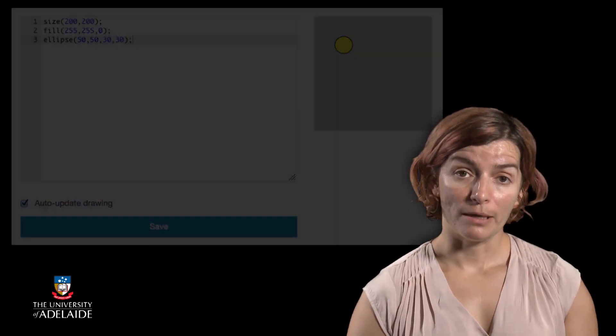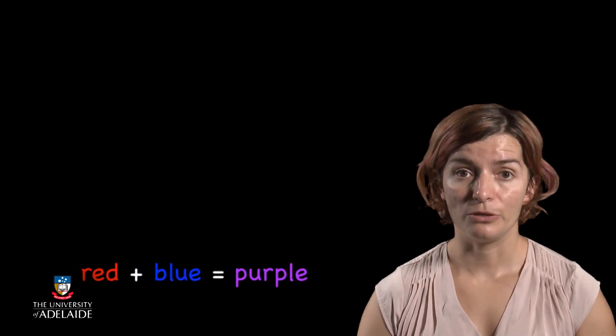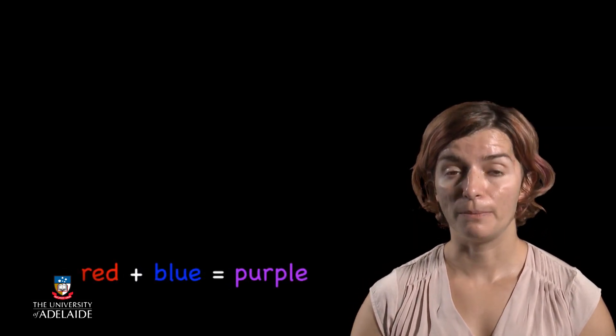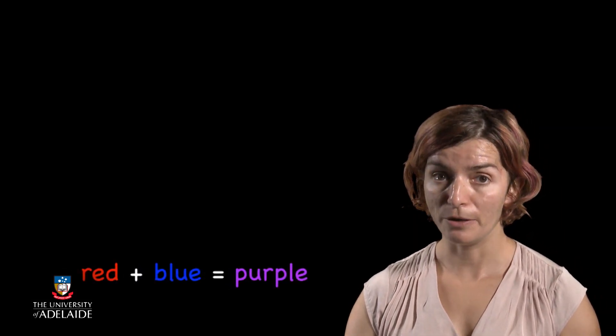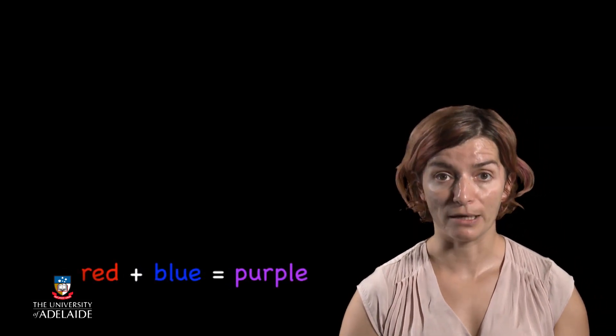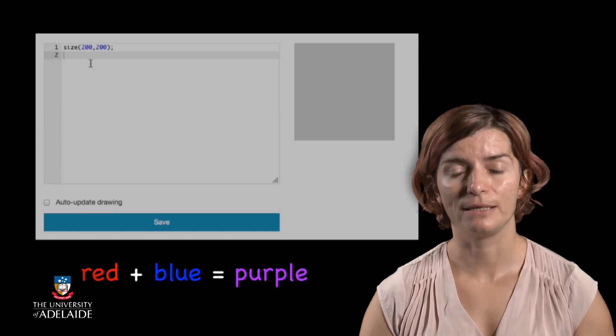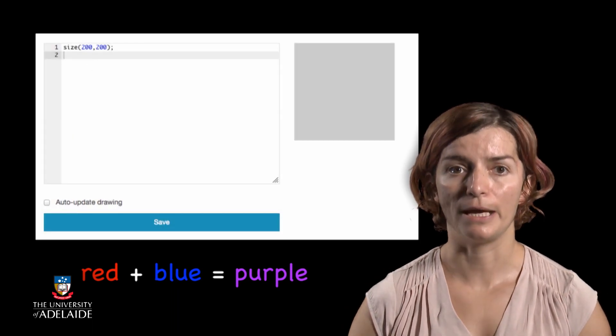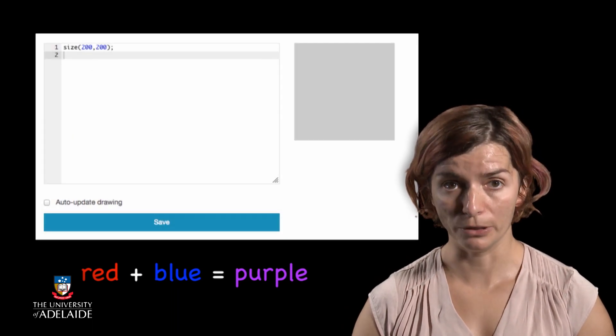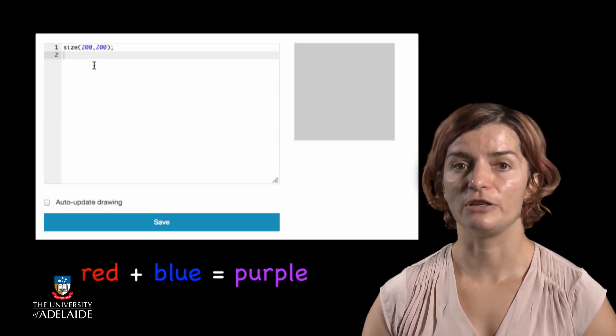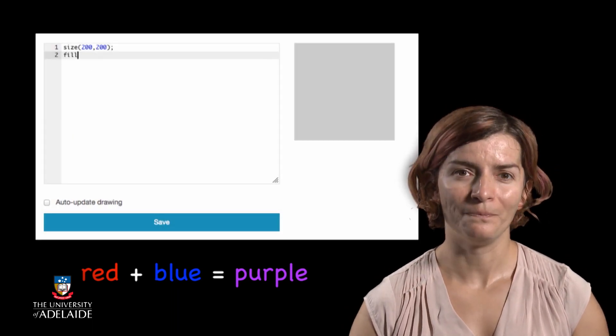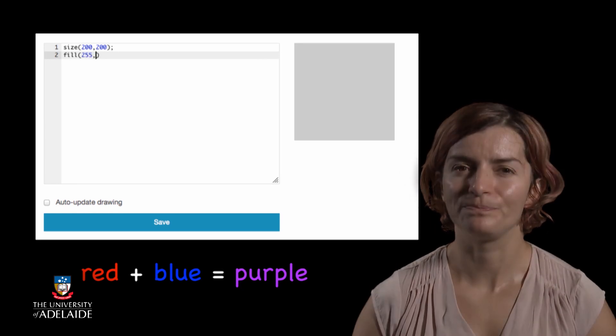If we want to create purple, we need to remember that red plus blue equals purple. So if we add all the red, none of the green, and all of the blue, then we should obtain purple. Let's try to fill a rectangle.